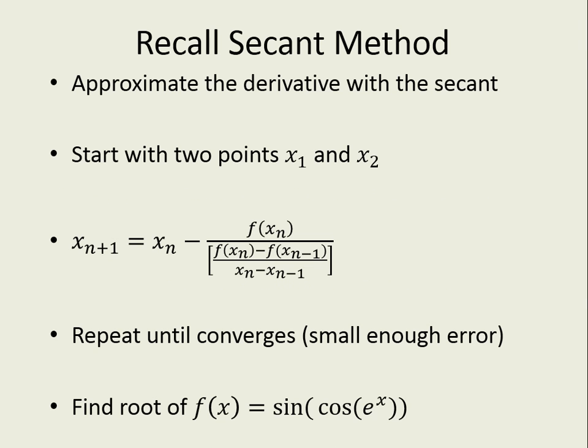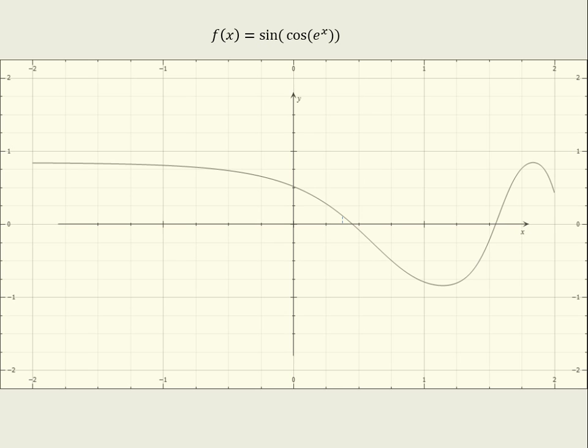Let's look at this example. Let's say our function is sine of cosine of e to the x, and we pick these two points. When we draw the secant that goes through those two points, it's not a very good approximation of the derivative at x1, which looks something like this. This is because we chose two points that are very far away from each other.